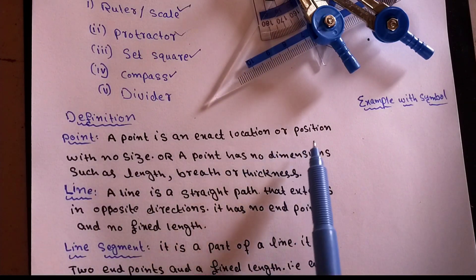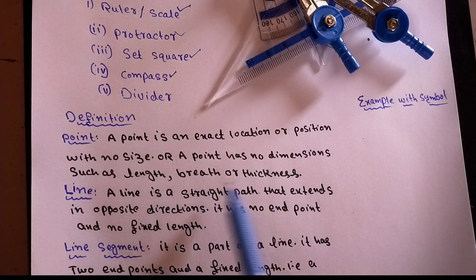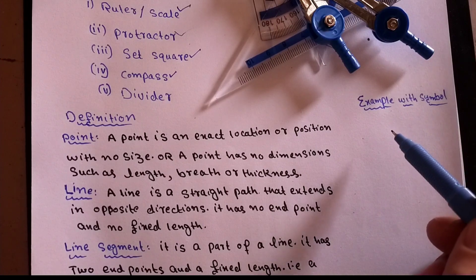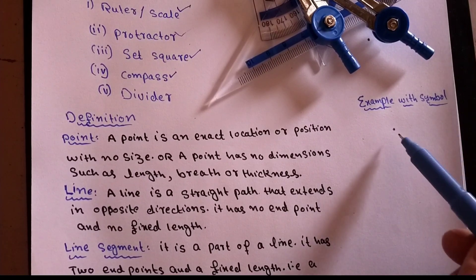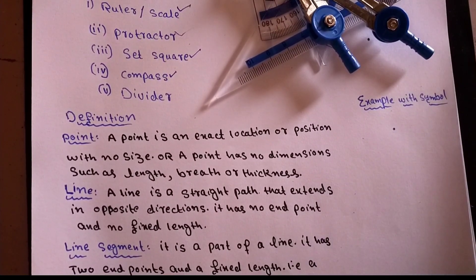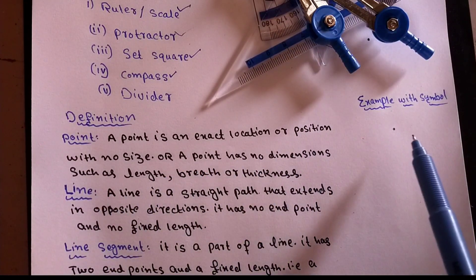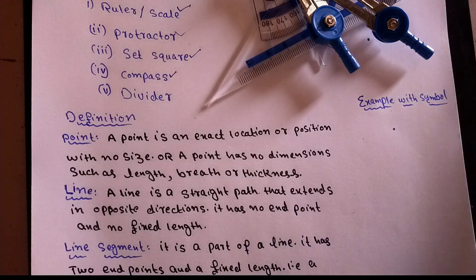Now let's discuss a point. A point is an exact location or position with no size. A point has no dimension such as length, breadth, or thickness. For example, when we press a pen tip or a needle down, wherever it touches gives us a point. A point is an exact location that has no length, width, breadth, or thickness.